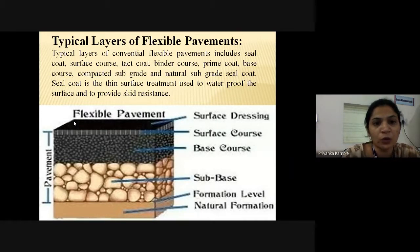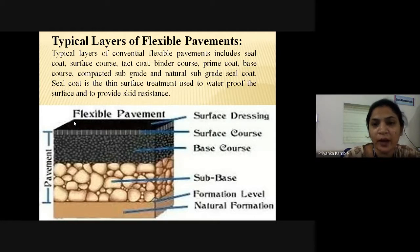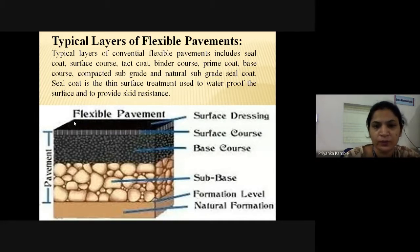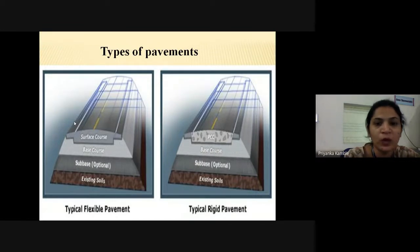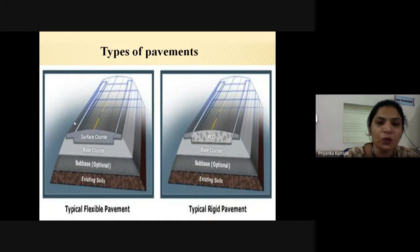So that is about the seal coat. The layers within the surface course include seal coat, tack coat, binder course, and prime coat. In the surface course, there are many sub-layers: first is seal coat, then tack coat, then prime coat.